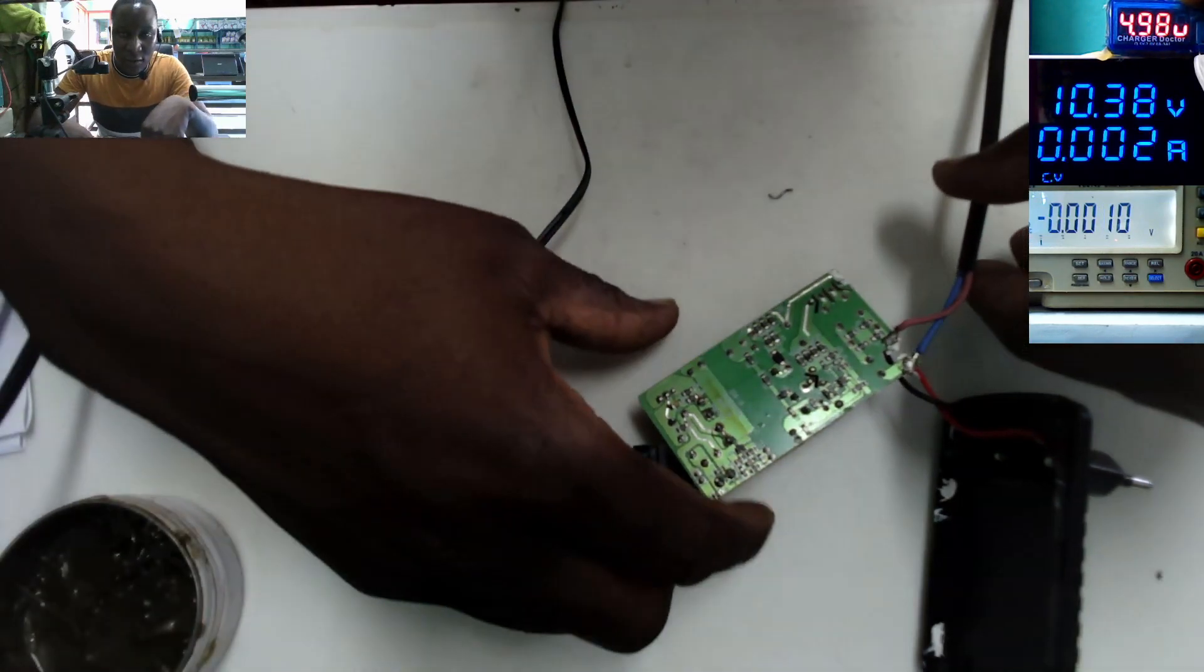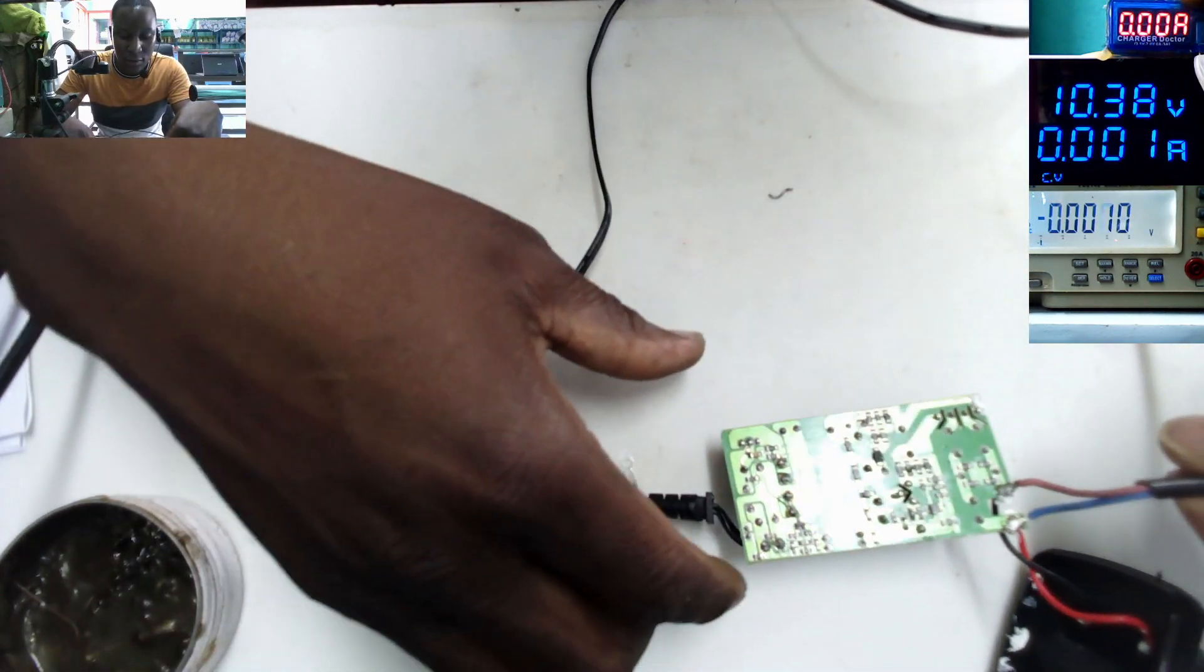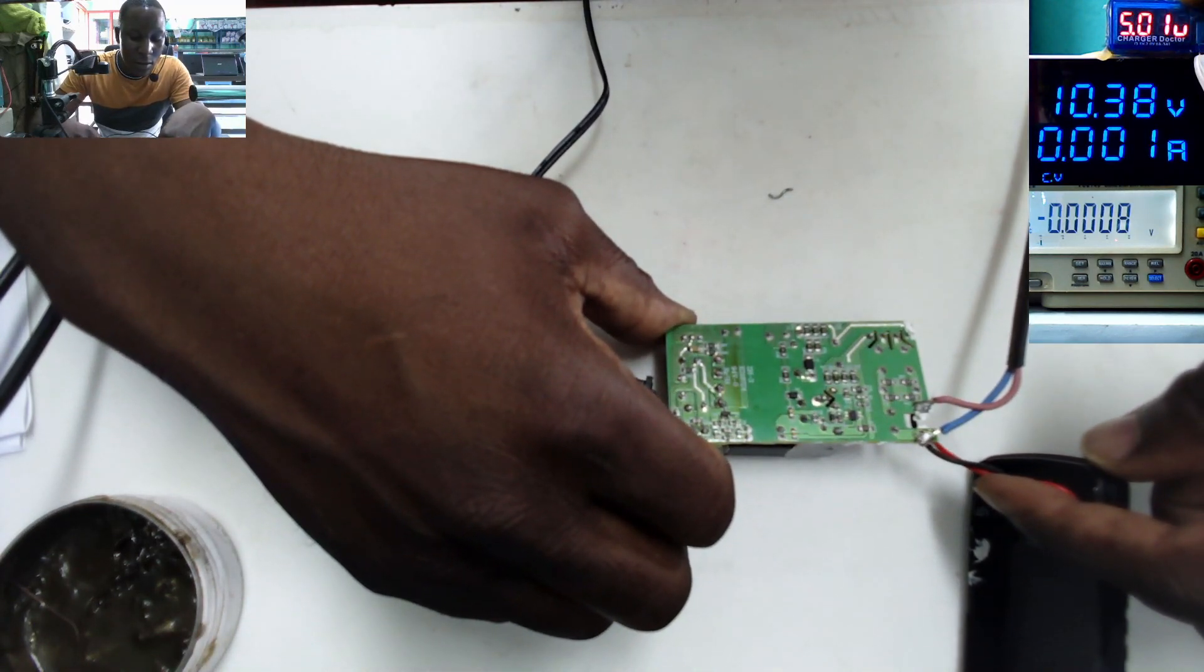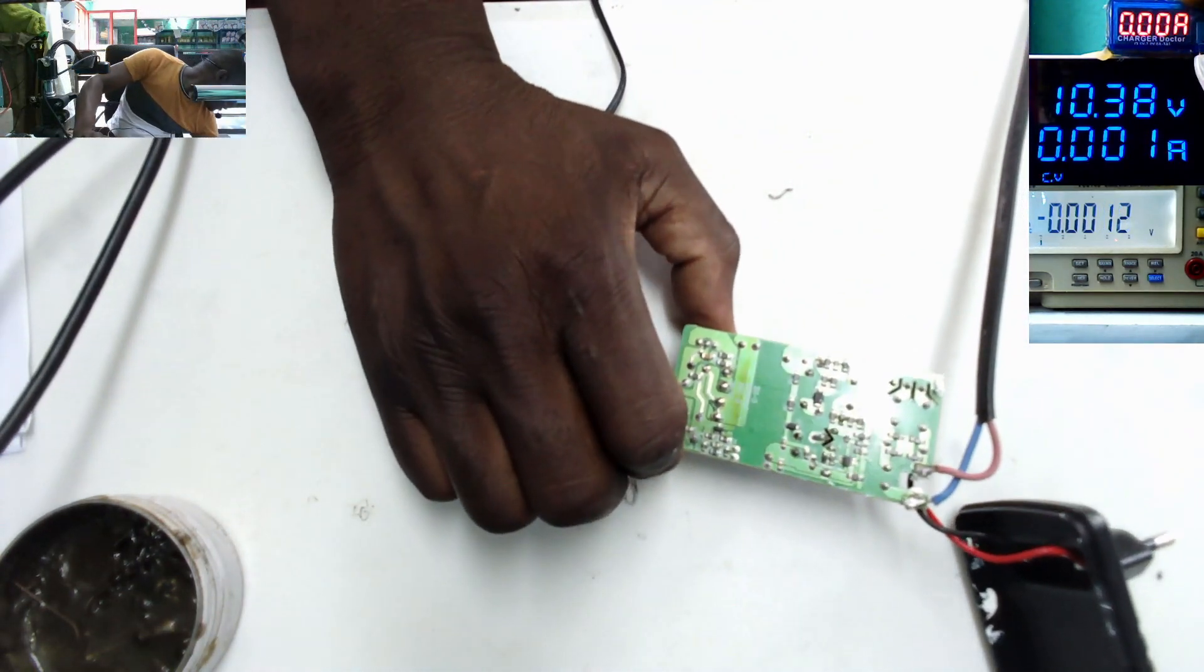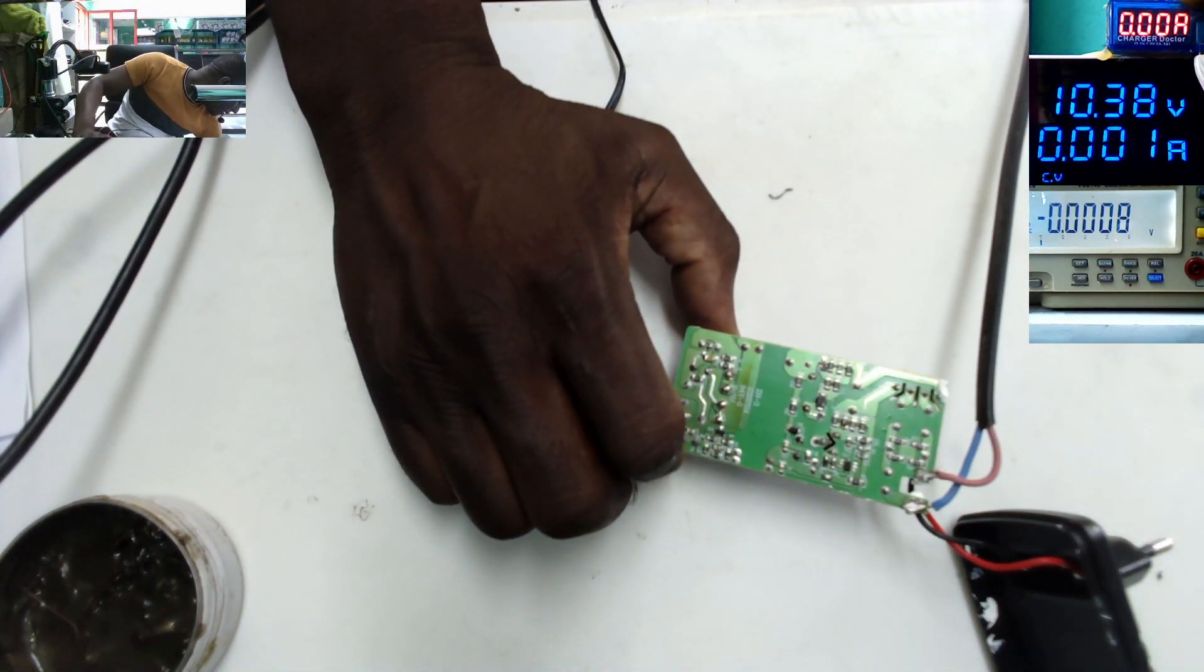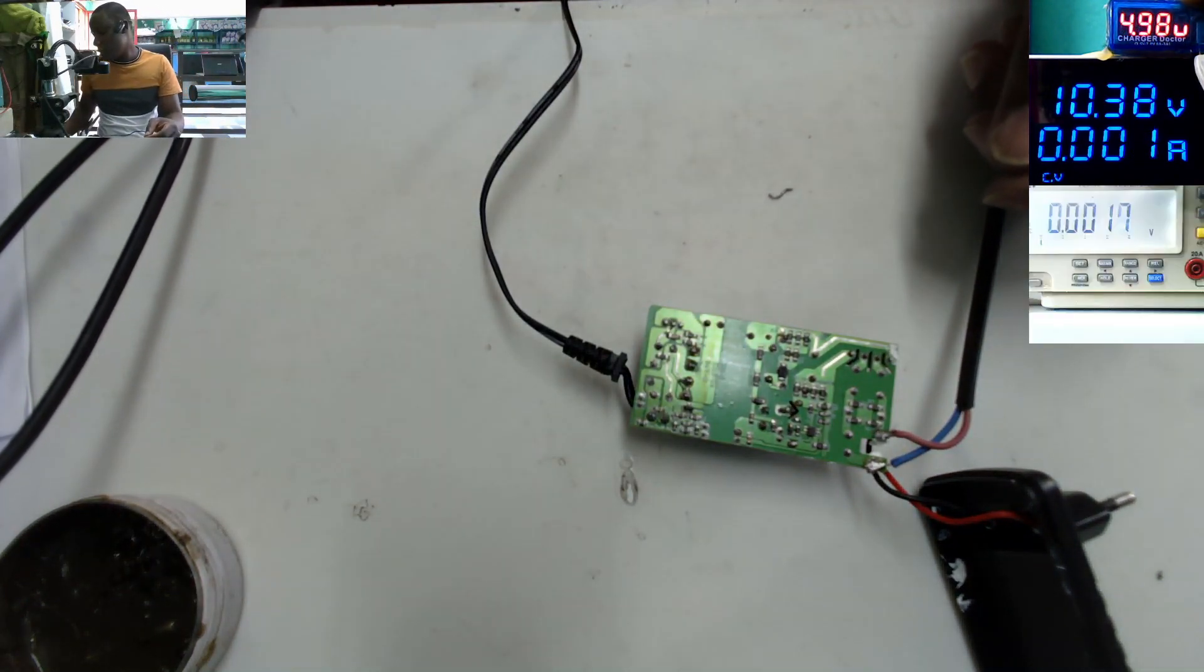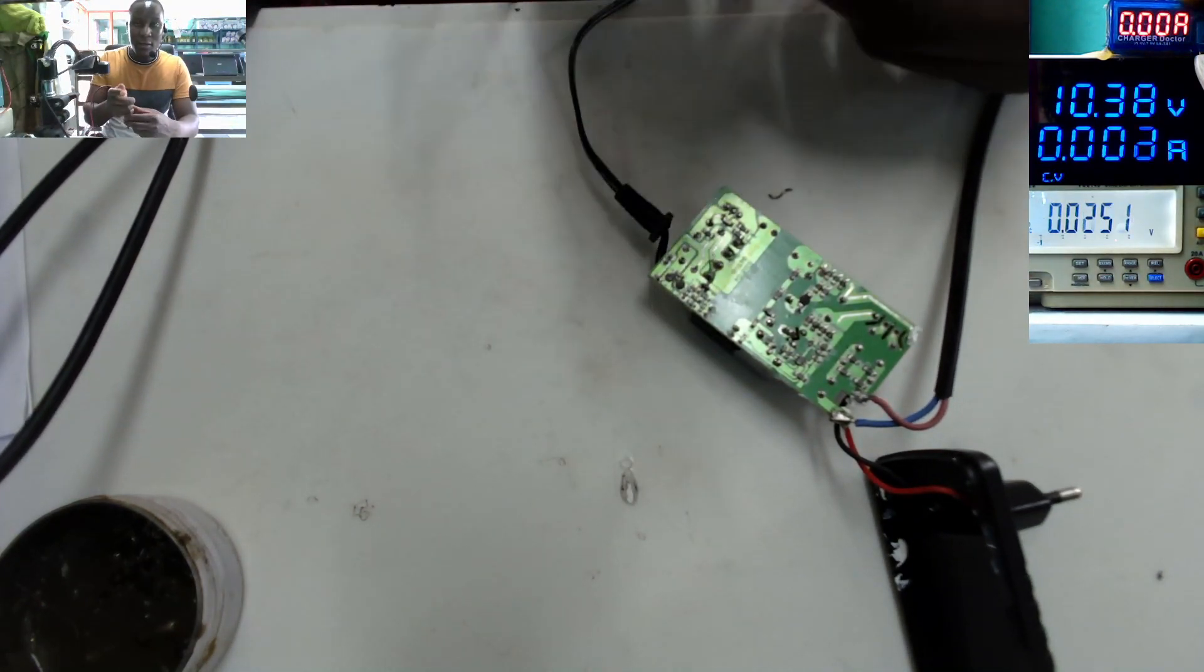I just finished soldering some wires. You can see these two wires on the input. I'll plug in and we check some voltage there. I want to go straight on the big capacitor.